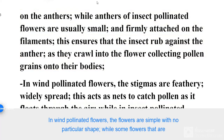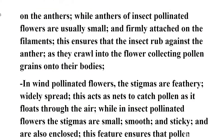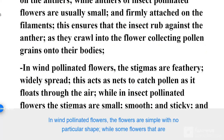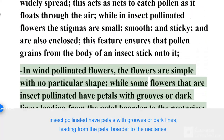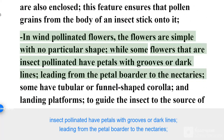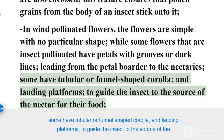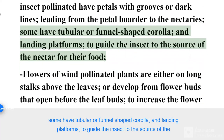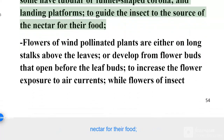In wind pollinated flowers, the flowers are simple with no particular shape, while some insect pollinated flowers have petals with grooves or dark lines leading from the petal border to the nectaries. Some have tubular or funnel-shaped corolla and landing platforms to guide the insect to the source of nectar for their food.